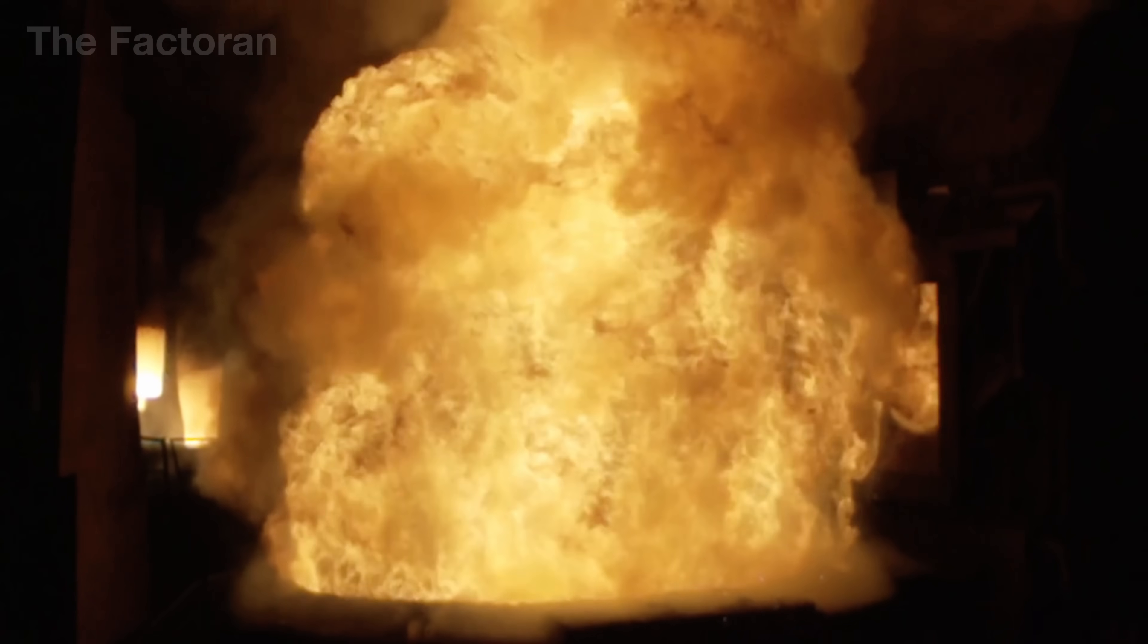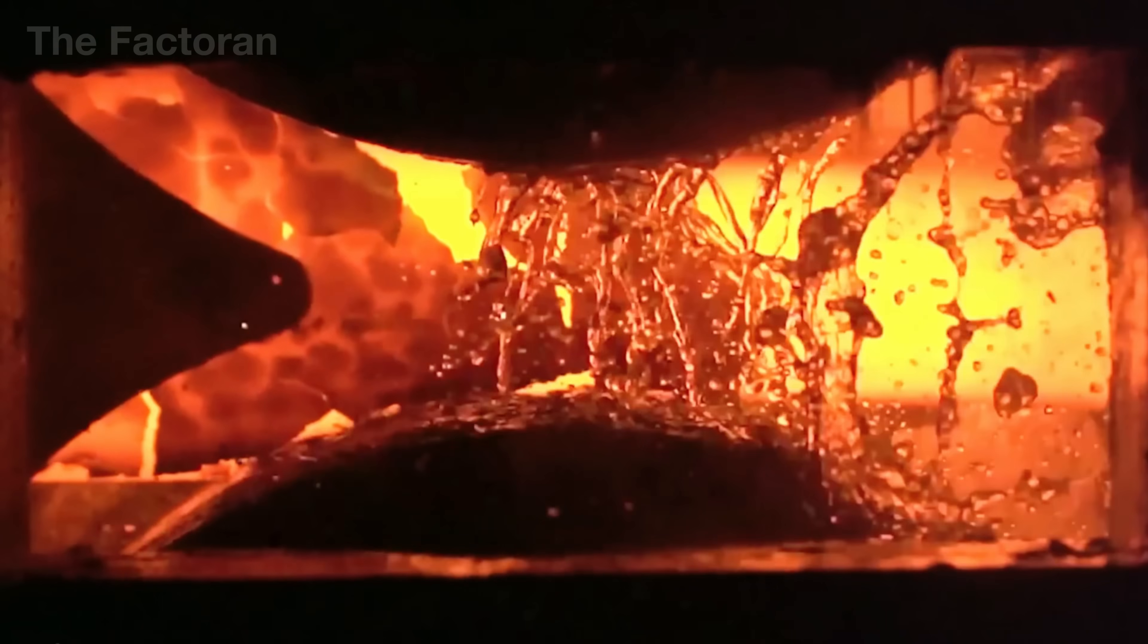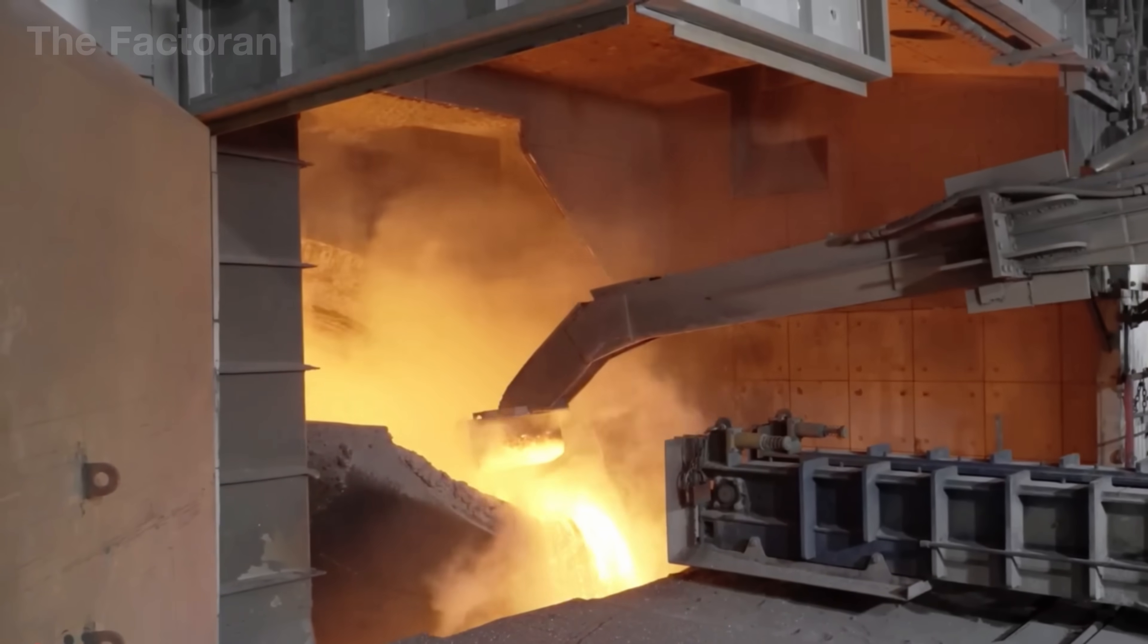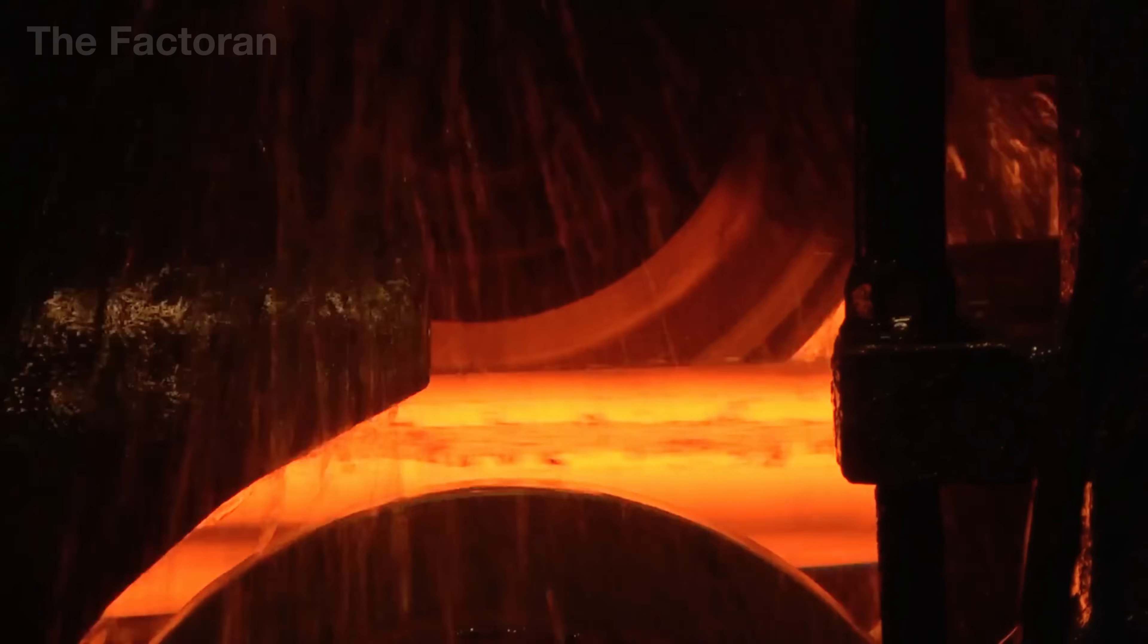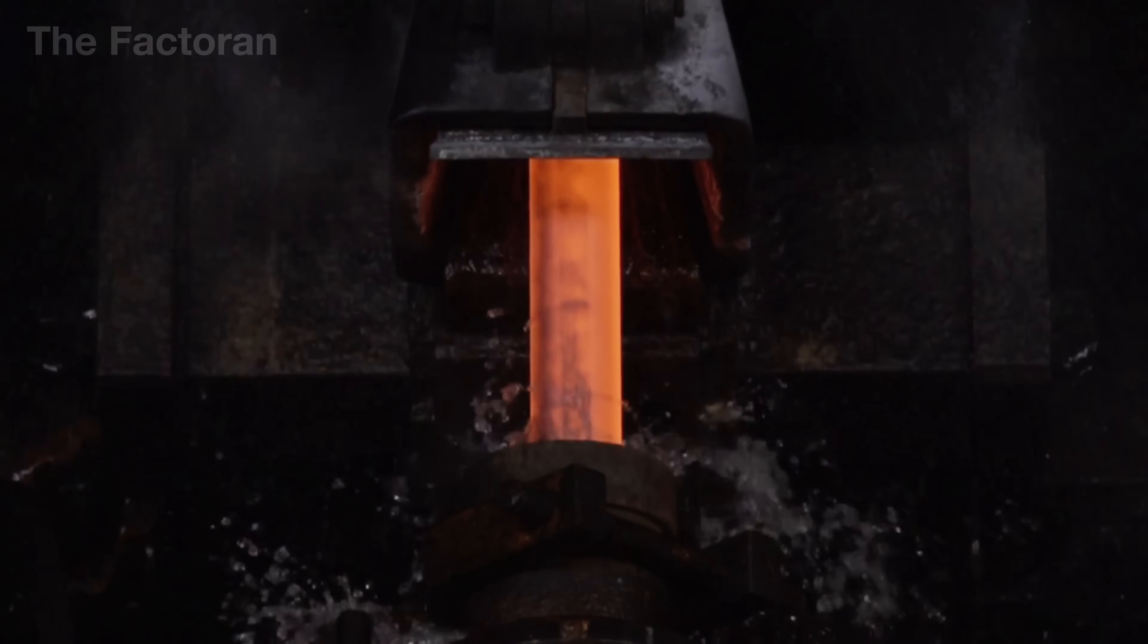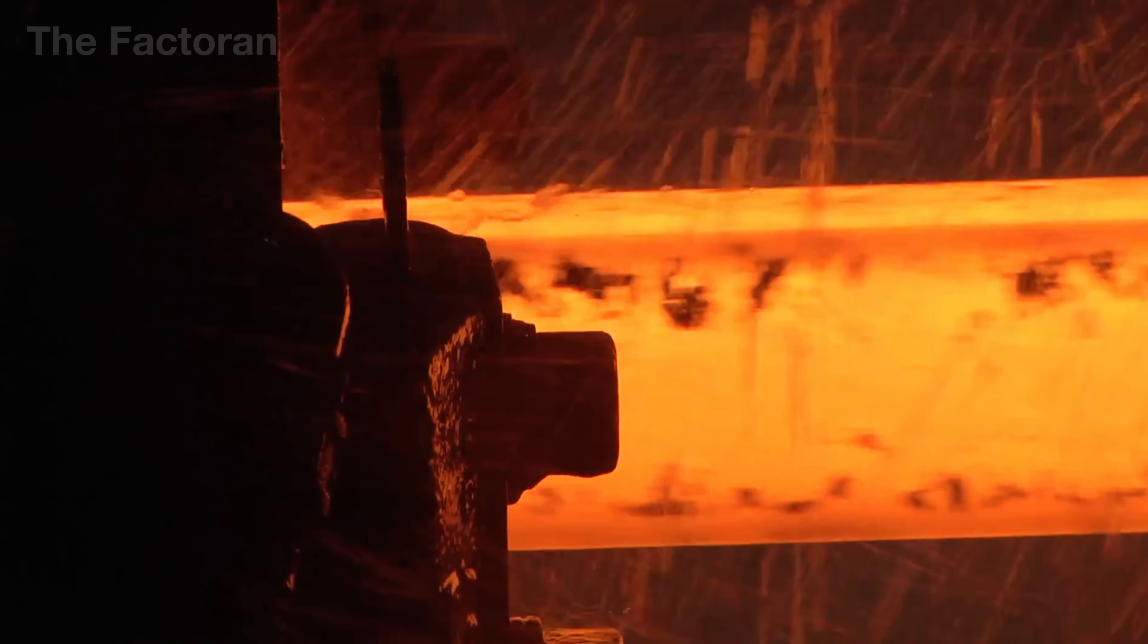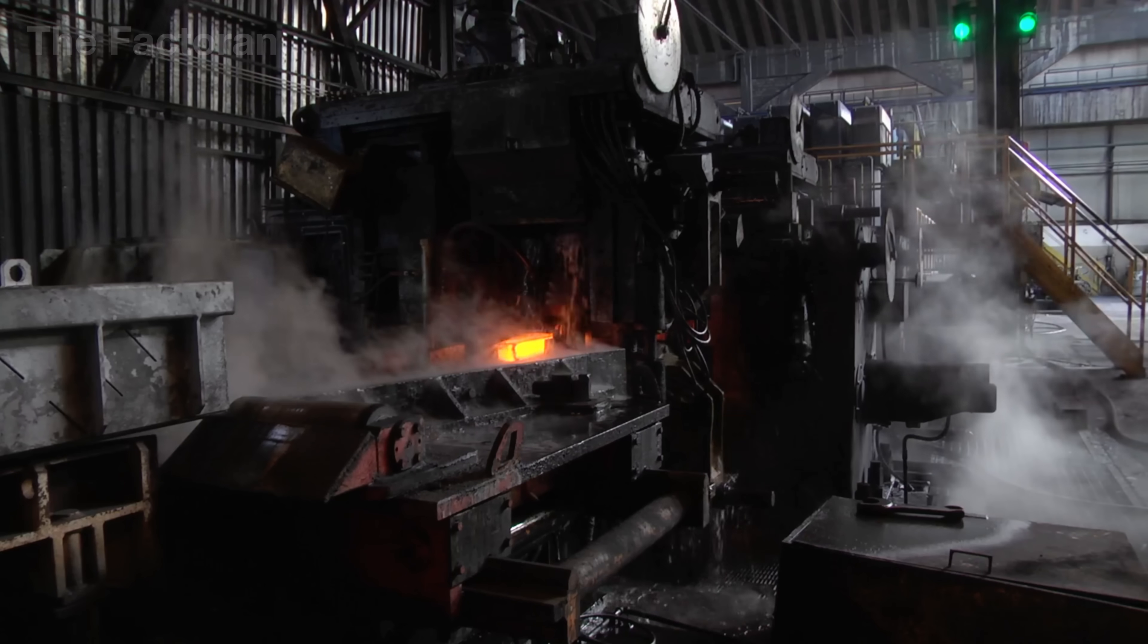Once the molten steel has been refined, reaching the required purity in chemical composition, it moves on to the casting stage. Unlike the old days of pouring batch by batch, today the hot steel is cast continuously into copper molds equipped with forced water cooling systems. As the liquid metal touches the cold mold walls, the outer shell solidifies instantly while the core remains molten, forming solid billets several meters long with a square or rectangular cross-section.